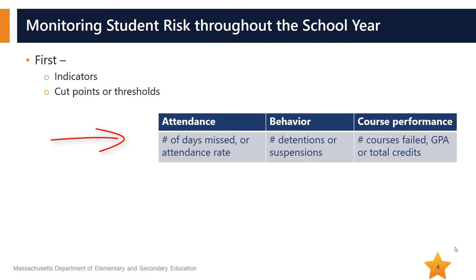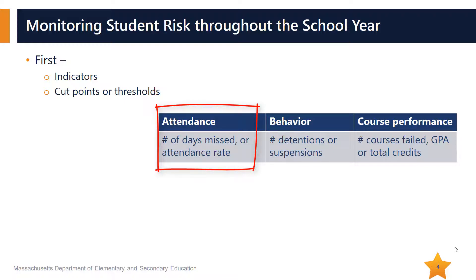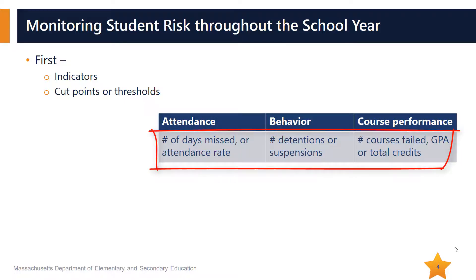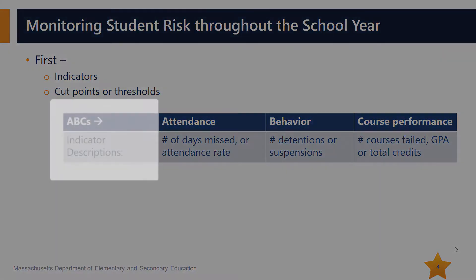Research shows that ABCs — attendance, behavior, and course performance — are powerful indicators of students' academic risk. If that feels like a lot, start small with just attendance. Thresholds, or cut points, are the scores at which students begin to show signs of academic risk. Use a threshold for each indicator.